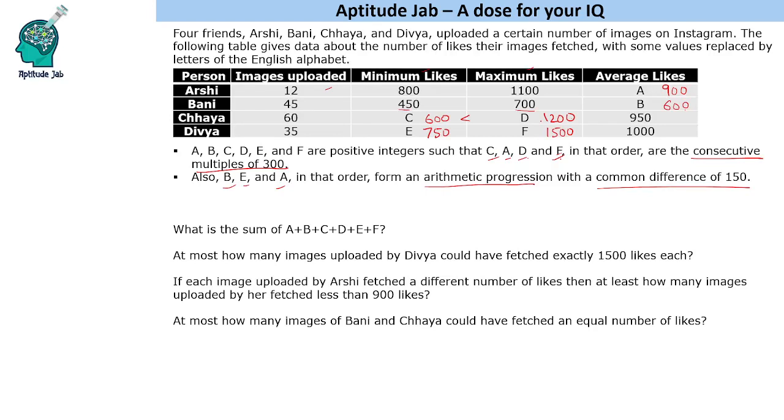The first question is very simple. We just need to add all these: sum of A + B + C + D + E + F. This is 15, 15, 15, 30, 42, 48, 55, 50. So 5550.